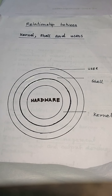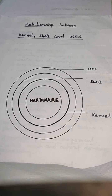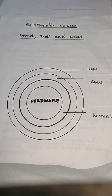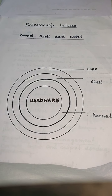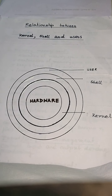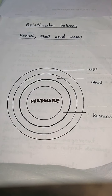Here is the diagram showing the relationship between kernel, shell, and users. What is the kernel? The kernel is the core of an operating system which provides the basic services for all other parts of the operating system. Without the kernel, hardware is inactive. A kernel is made of a number of software subsystems like process management, memory management, input-output management, and file management. These are the basic needs.